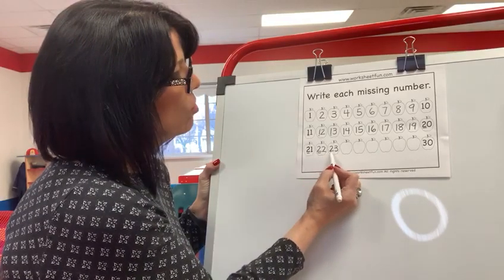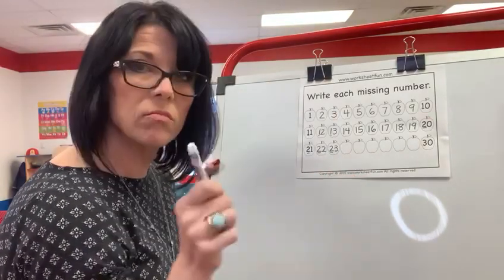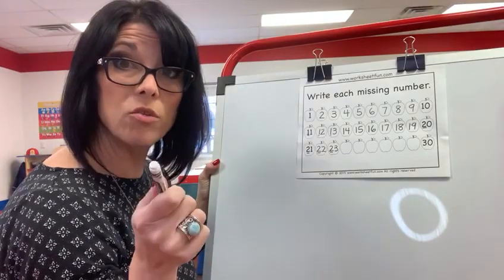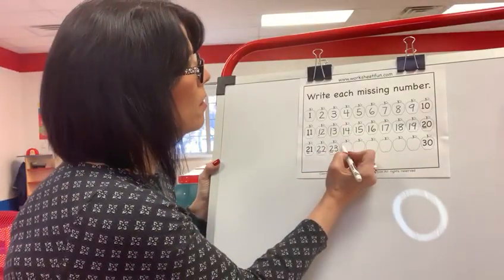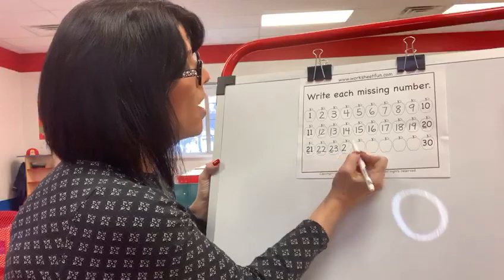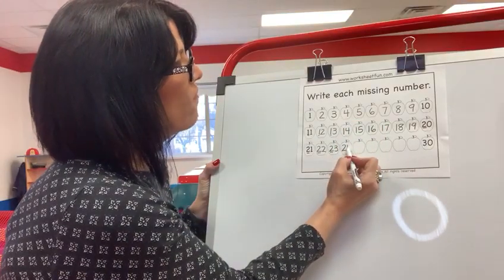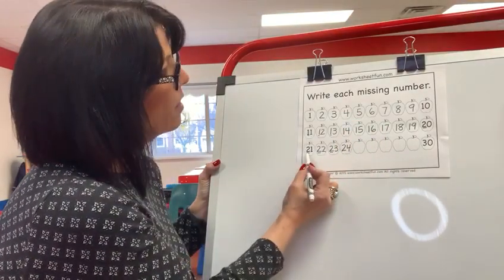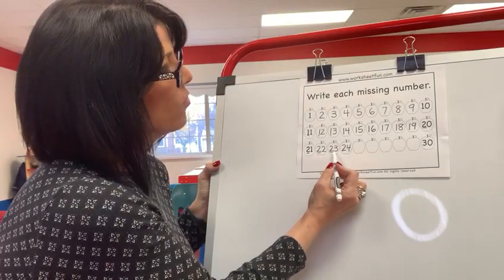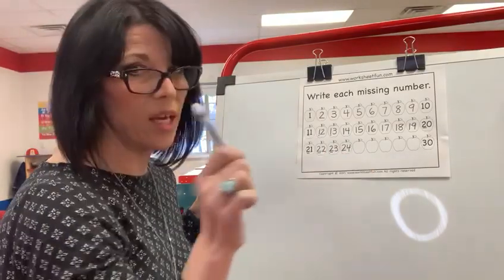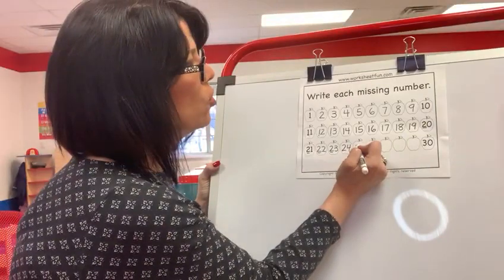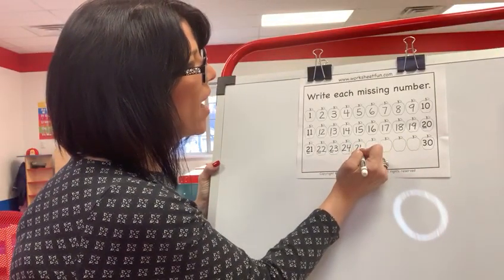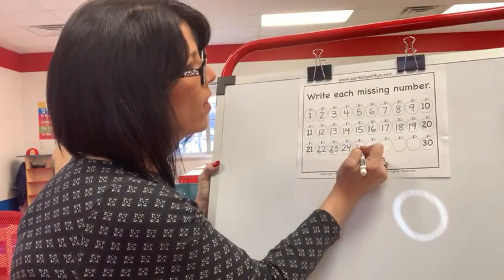So I've got my two, two, two. What should I do now? Put a two right because I'm in the 20 family. Here's my two. I bring my four down. 24. So I've got 21, 22, 23, 24, 20. You got it. 25, two and a five.